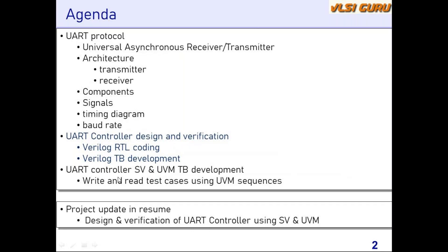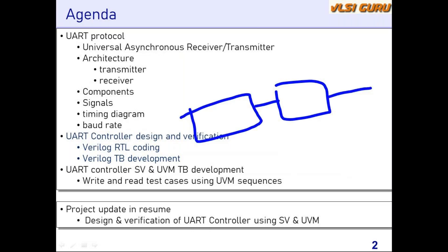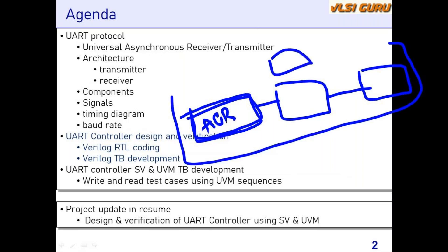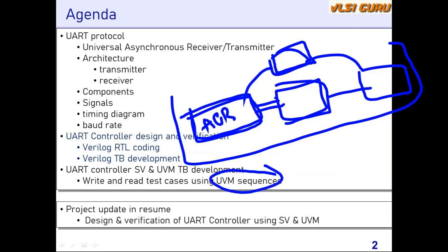In the third part of the course, we'll be doing the UART controller system Verilog and UVM-based testbench development. The same Verilog code we have developed has two interfaces — one is the APB interface and one is the UART slave interface. We are going to develop the UVM-related components: what we call the APB UVC, and we'll also be developing the UART slave. Then we'll be developing a scoreboard to connect these things and check the behavior of the UART controller. We'll also be learning how to develop sequences for initiating these transfers, and how to map test cases to the sequences.